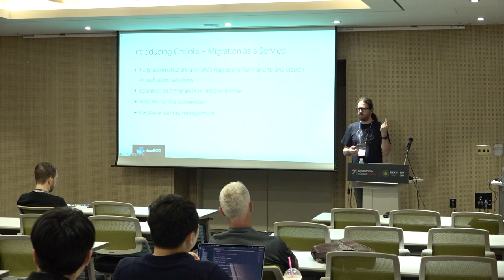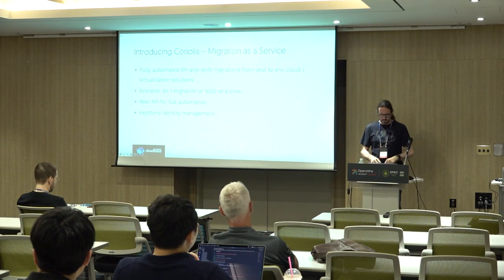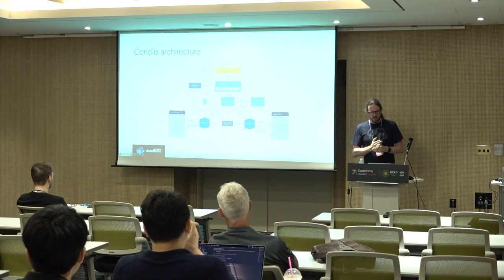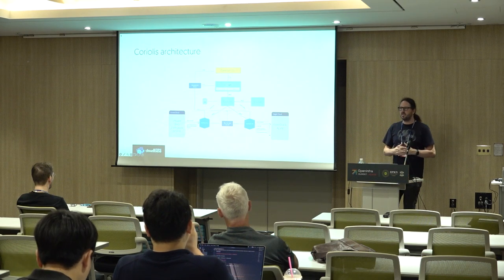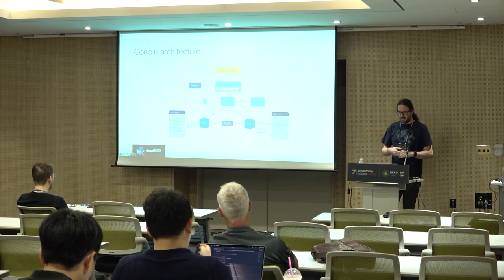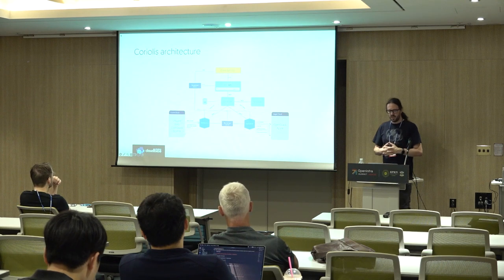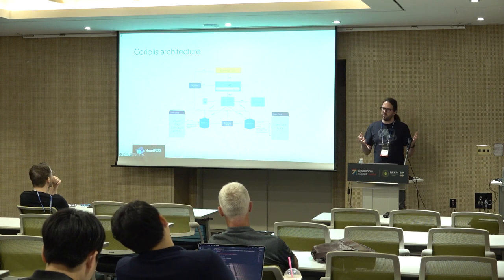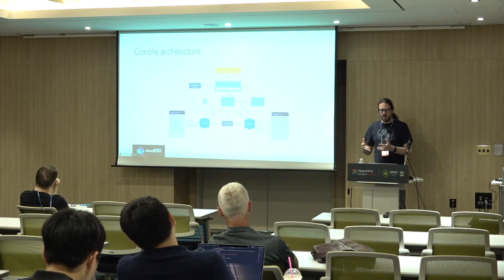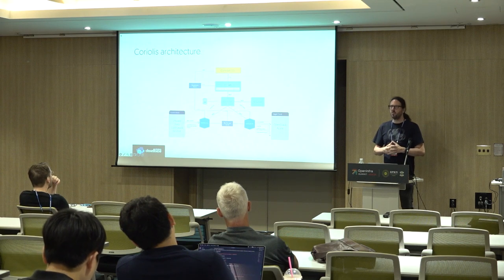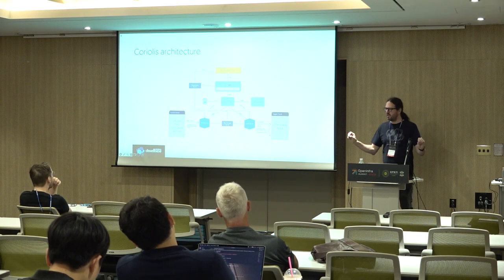It was also designed to scale fully automated — whether you want to migrate one VM or thousands, it has to work. In terms of architecture, if you're familiar with OpenStack components this should be relatively familiar. You have a REST API endpoint, Keystone for identity management, a client with both a GUI and CLI, a conductor that communicates via AMQP queues with the REST API and other components, a database for storing configurations, a scheduler that handles all migration and replica jobs, and then worker processes which communicate with individual clouds.